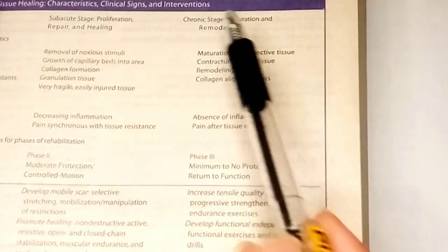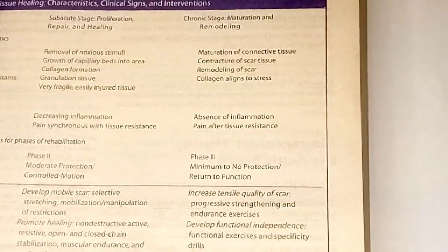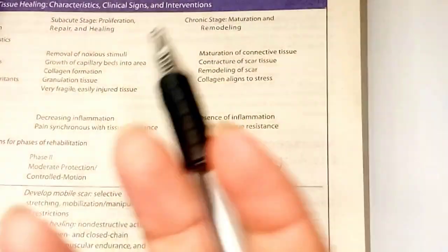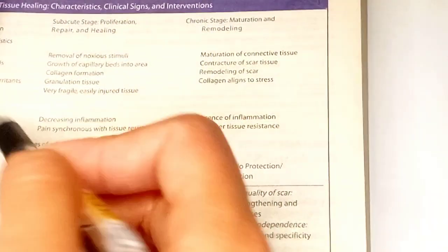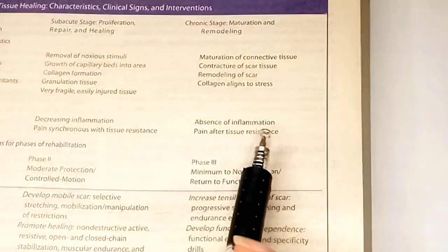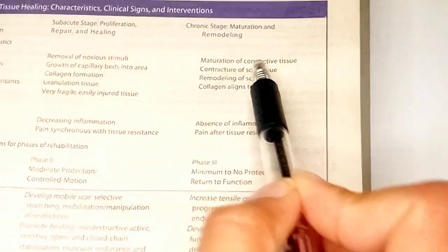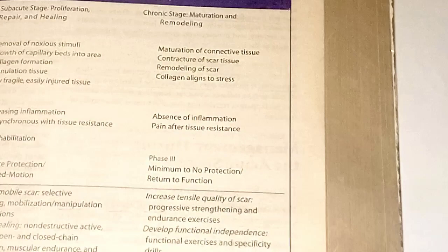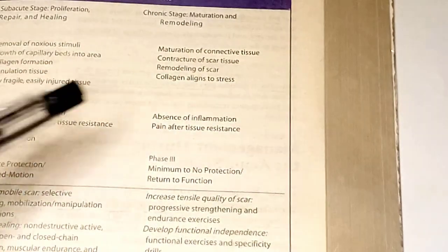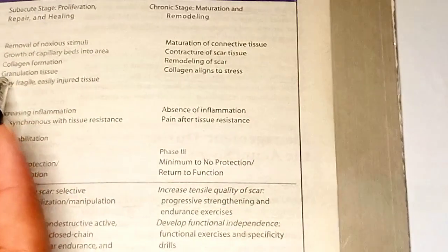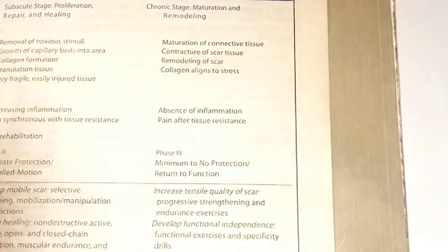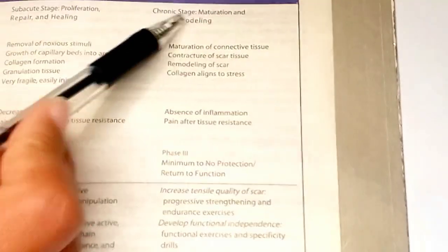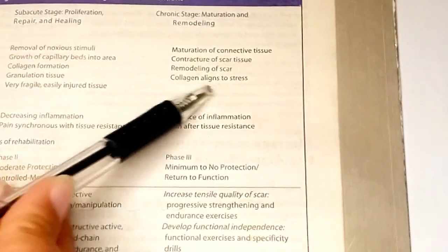Now let's discuss the chronic stage from the book. The chronic stage is basically the stage of maturation and remodeling of the tissues formed in the subacute stage. The granulation tissue is going to mature in this stage. Tissue responses include maturation of connective tissue, contracture of scar tissue due to myofibroblastic activity, and remodeling of the scar. In the subacute stage, collagen was irregularly deposited, but in the chronic stage the collagen aligns to stress and becomes organized.